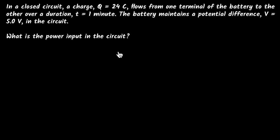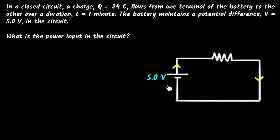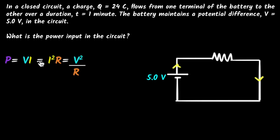The first thing I do is draw a circuit. We are given that we have a battery of 5 volts. There must be some resistor and some current. We are asked to calculate the power input. Power is basically how much energy is being provided per second. The formula for power is P equals V times I. If you take the voltage of the battery and multiply it by the current, you get how much power the battery is inputting into the circuit.